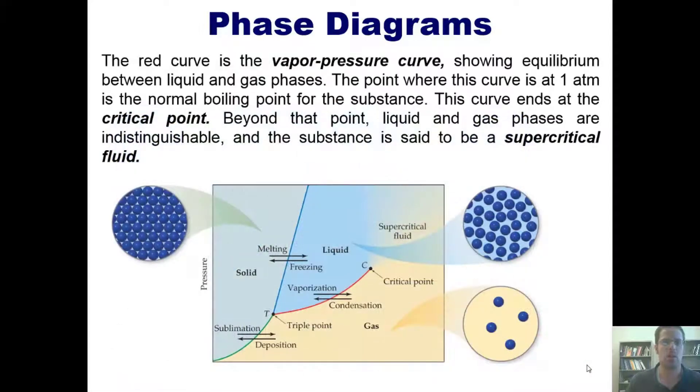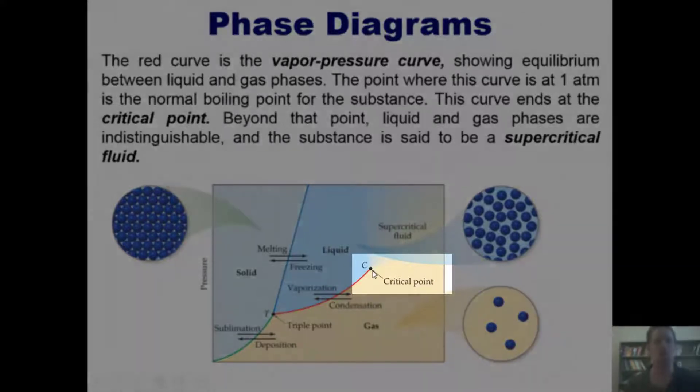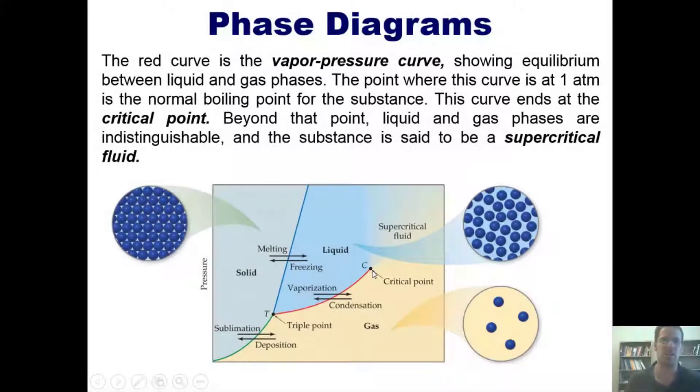The red curve is called the vapor pressure curve, right here, and it shows the equilibrium between liquid and gas phases. You can see this kind of deeper blue is liquid and this yellowish color represents the gas phase. The point at which this curve is at one atmosphere is the normal boiling point for the substance. The curve ends at this critical point, which you can see right here. Beyond the critical point, the liquid and gas phases are indistinguishable and the substance is said to be a supercritical fluid.